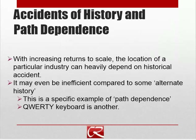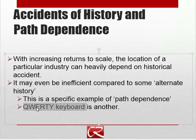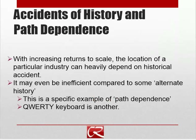In technology, path dependence is often claimed to play an important role. The example is: why do we have the keyboard layout we do, where the top row is Q, W, E, R, T, Y? The story goes back to early mechanical typewriters, where to keep people from typing so fast that the keys would jam, they put some of the most frequently used keys — like E, R, and T — up where it's actually less convenient. Once that started, everyone got locked into it, even though we now have electronic devices where keys aren't going to jam.